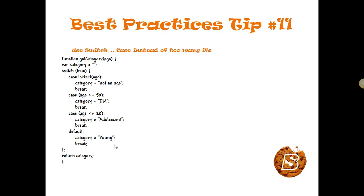Tip number eleven: instead of using too many if statements, we should go for switch-case statements. As we can see in this function, we are passing age — if age is not a number we say 'not an age', if age is greater than or equal to 50 we say 'old', if age is less than or equal to 20 we say 'adolescent', and if nothing matches we say 'young'.